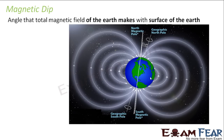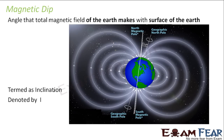When you place the needle anywhere on the surface of the earth, there is everywhere a component along the surface of the earth. The total magnetic field of the earth is shown by the needle. The deflection of the magnetic needle with respect to the surface of the earth is known as the magnetic dip. It is generally termed as dip inclination and denoted by a capital I.